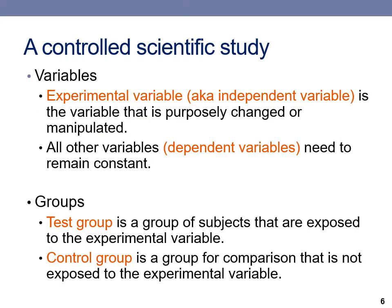In a controlled scientific study, the variables and groups must be defined. Variables are either independent or dependent. The independent variable is the variable that is purposely changed or manipulated — usually only one variable is changed at a time, while other variables are kept constant. Groups are the subjects or living organisms participating in the study. The test group are the subjects exposed to the independent variable. The control group is a group for comparison that is not exposed to the experimental variable.